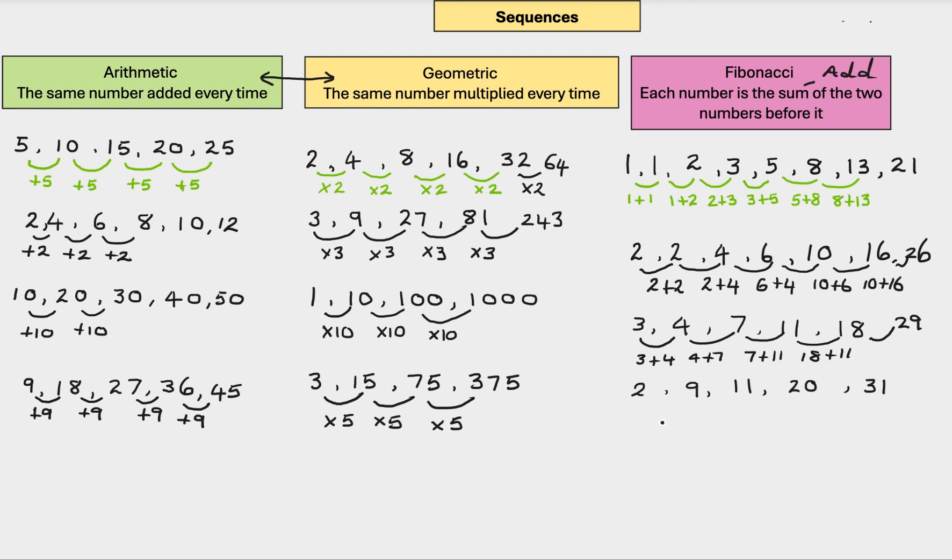18 plus 11 equals 29. Let's do one last one. 2 plus 9 equals 11. 9 plus 11 equals 20. 11 plus 20 equals 31. And 31 plus 20 equals 51.